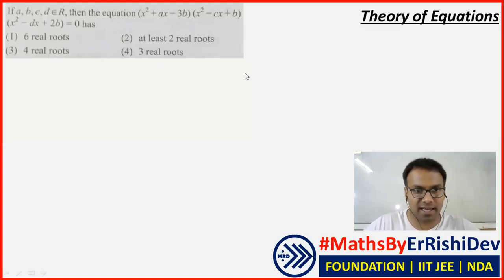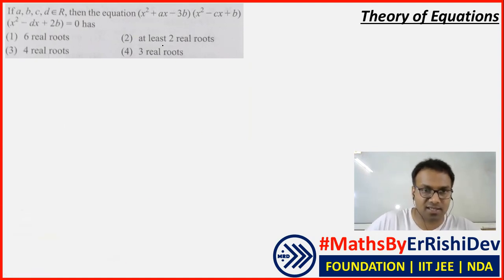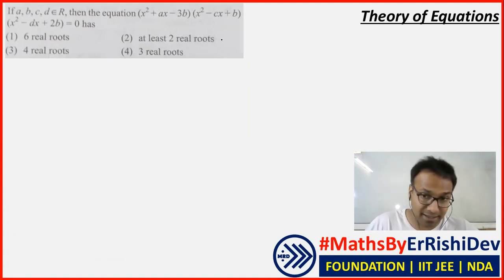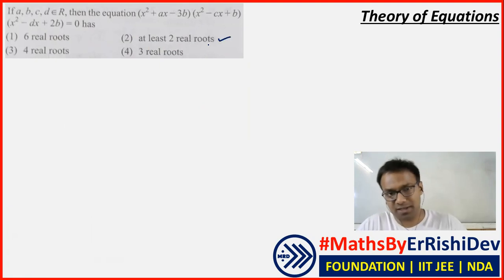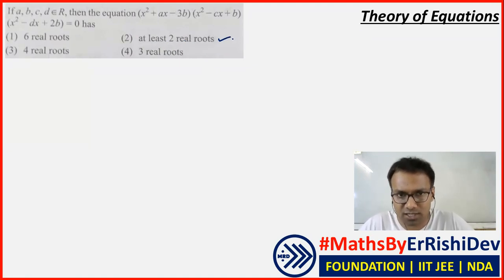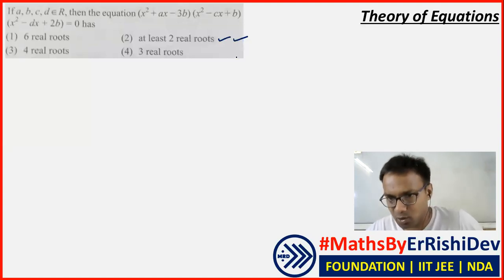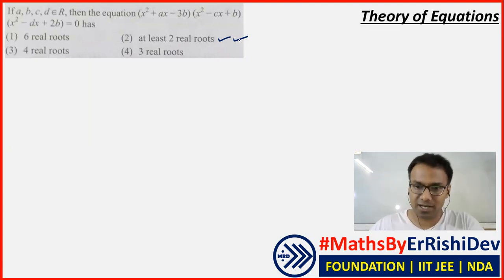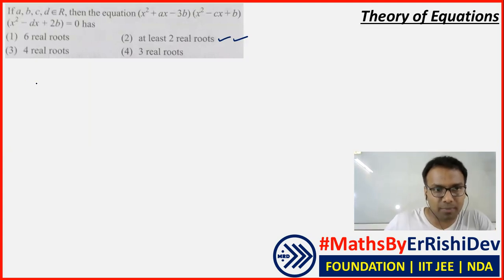Now we have another equation where a, b, c, d are real numbers. A student suggested: if you look at the options — six roots, at least two roots, four roots, three roots — the intersection of all cases is 'at least two.' So if you apply pure logic without any concept, the answer is option two. But let's also understand the concept behind it so we can always deal with such questions conceptually.